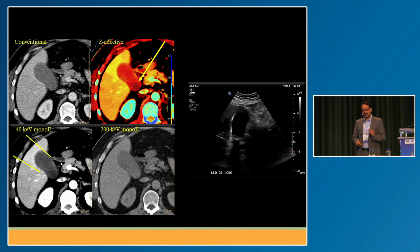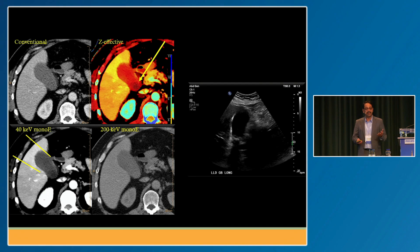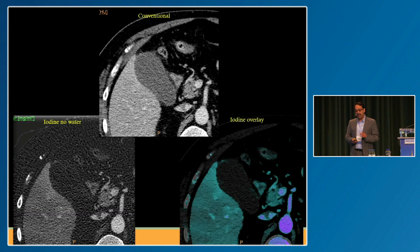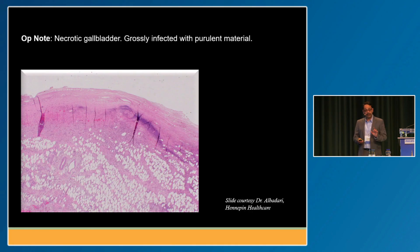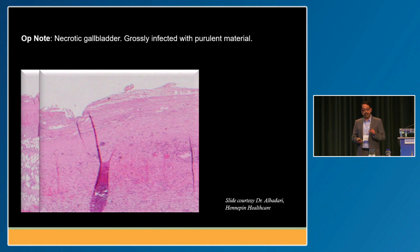The ultrasound in this patient is actually kind of unimpressive. I don't think ultrasound does that great for acute cholecystitis for a whole host of reasons. But there is more — on the same case, you look at the gallbladder wall on the iodine map, and there is no uptake of iodine in the gallbladder wall. This is a necrotic gallbladder, confirmed on surgery, where the gallbladder mucosa is completely denuded.